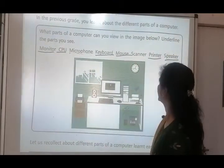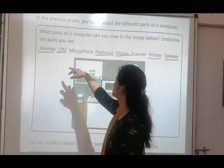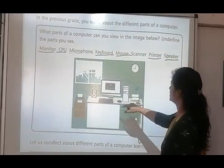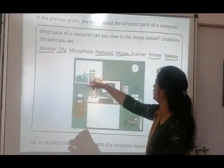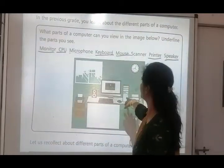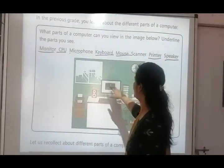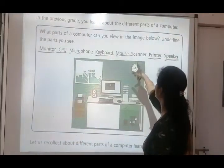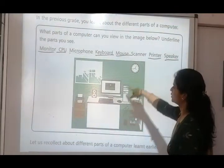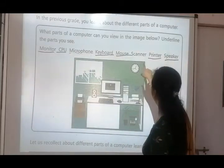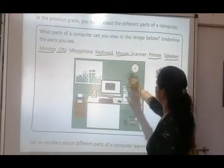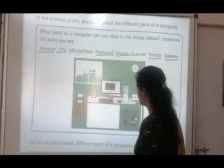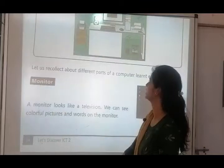There are many spellings given in brackets: monitor, CPU, microphone, keyboard, mouse, scanner, printer, and speaker. In this image, the first one is monitor — dekh rahe hain. Then CPU is also visible. Microphone is not there. Keyboard is there — underline it. Mouse is also there — underline that. Scanner is not there. Printer is on the table — underline that. Speaker is also present.